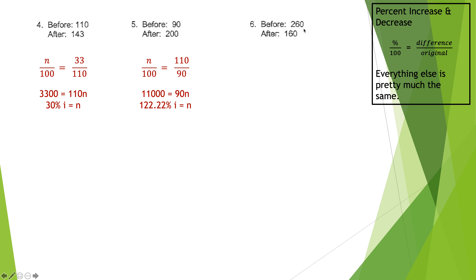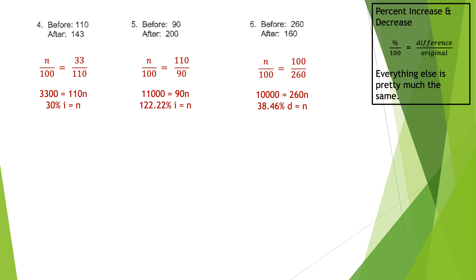For problem six, you're going down from 260 to 160, so it will be a decrease — marked with a D. n over 100 equals the change of 100 over the original amount of 260. Cross multiplying gives 10000 equals 260n. Dividing by 260 gives n equals 38.46 percent decrease.